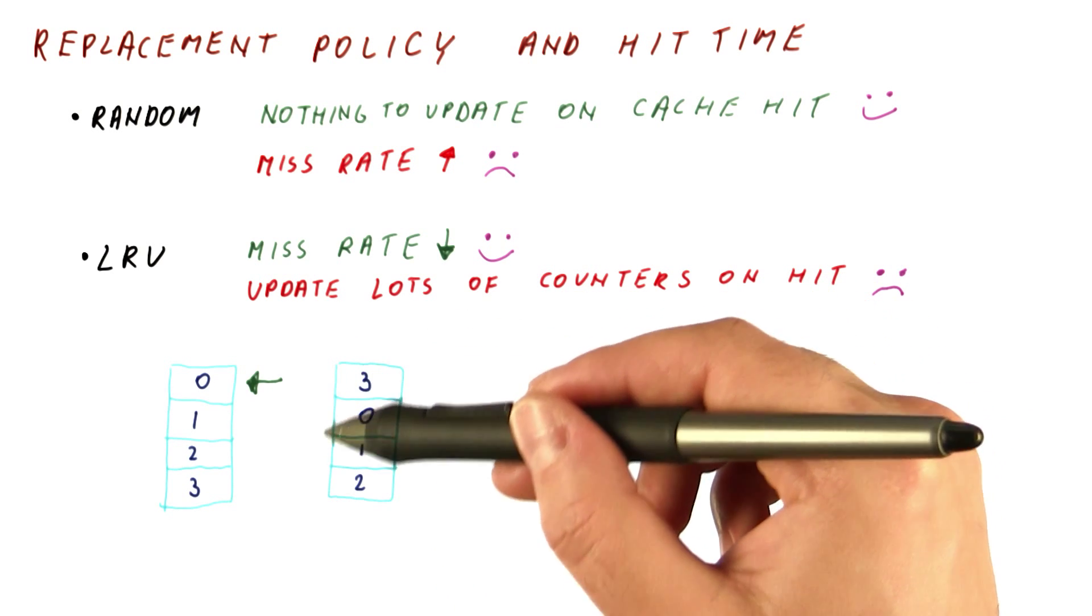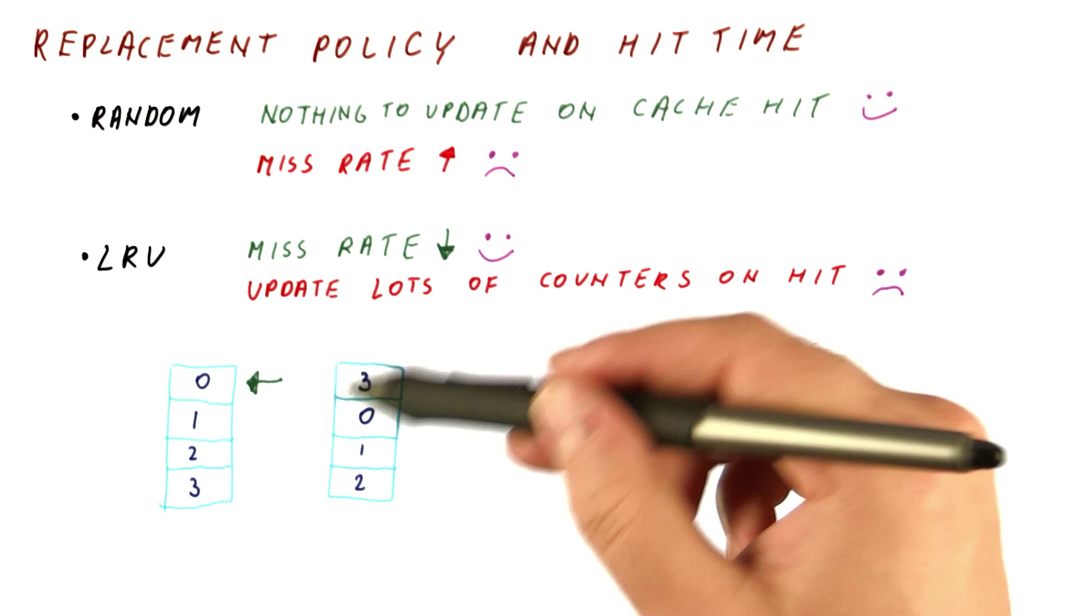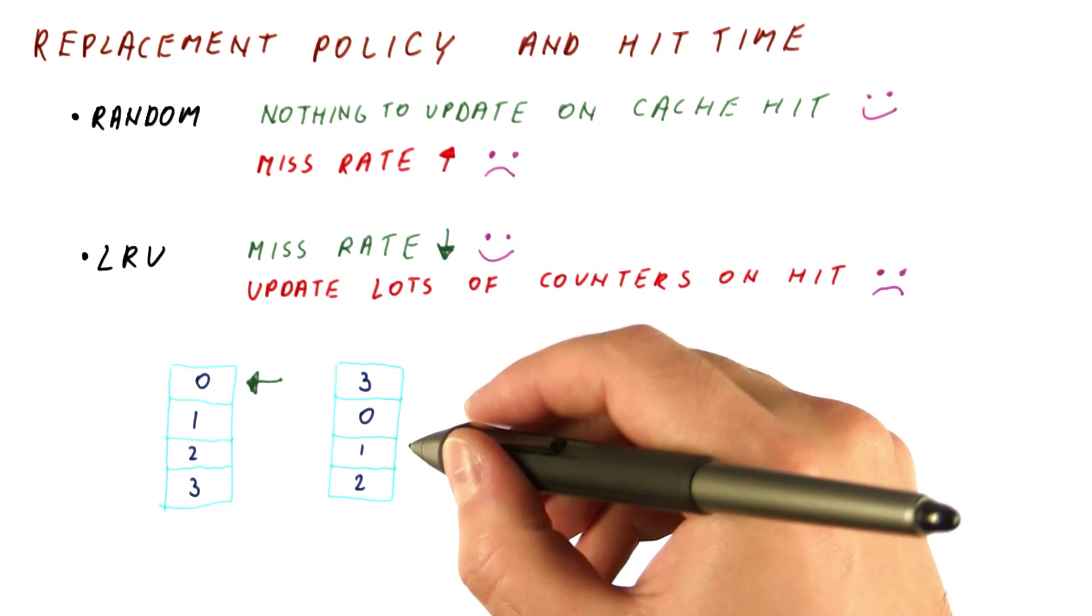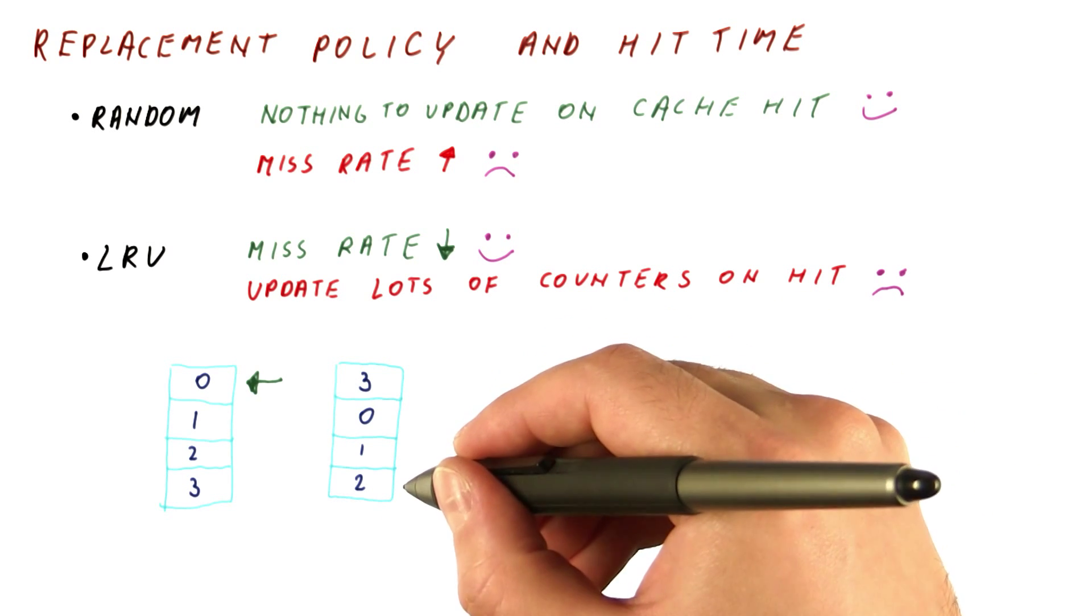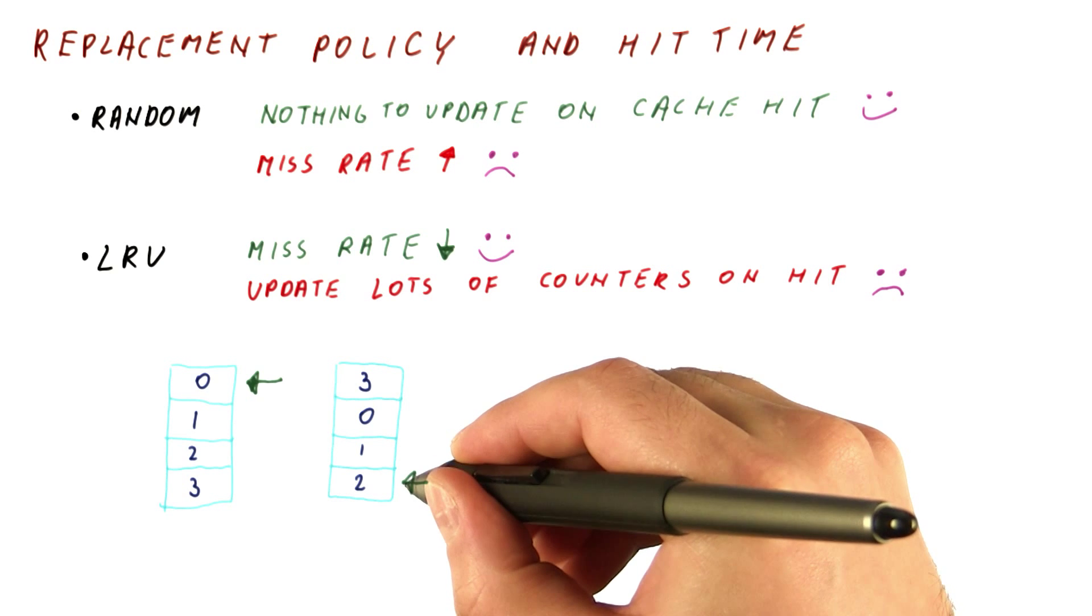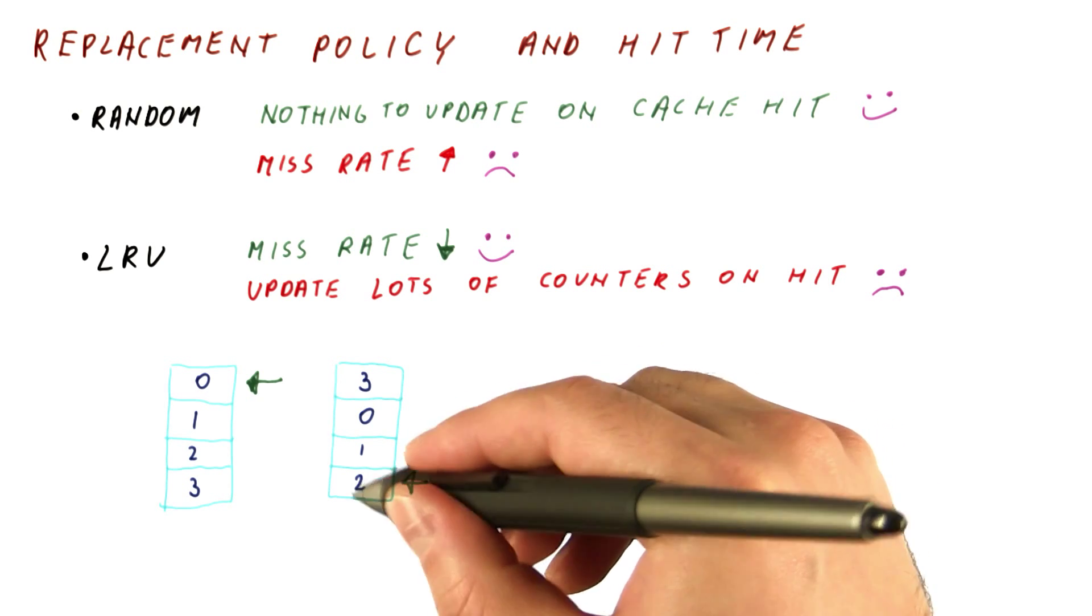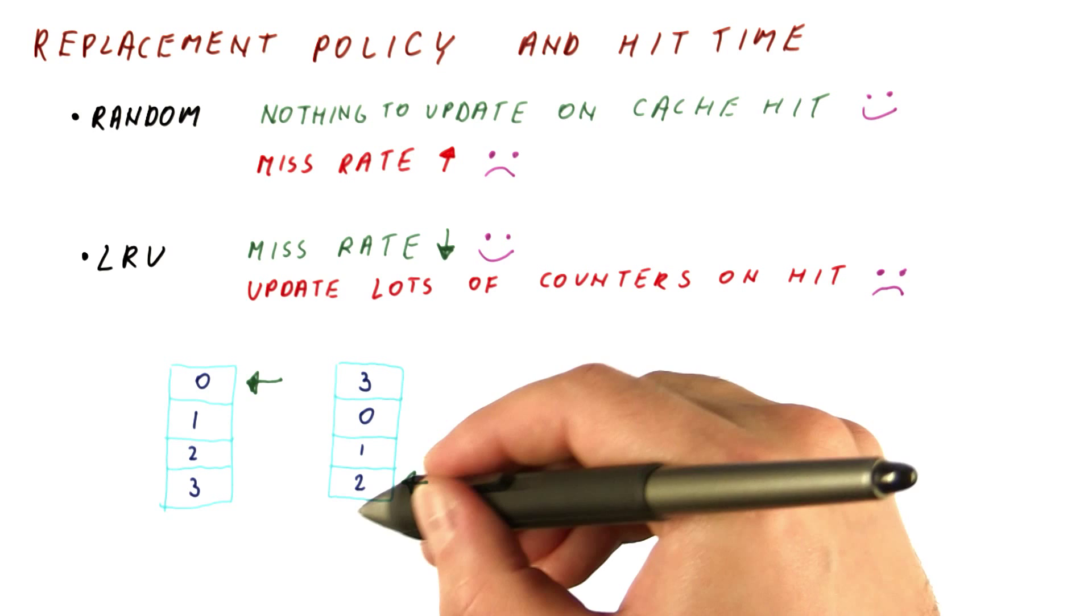So a cache hit can result in updating up to N counters, where N is our associativity. Let's look at what happens when one of the more recently used blocks is accessed. Let's say we access not the most recently used, but the next one.